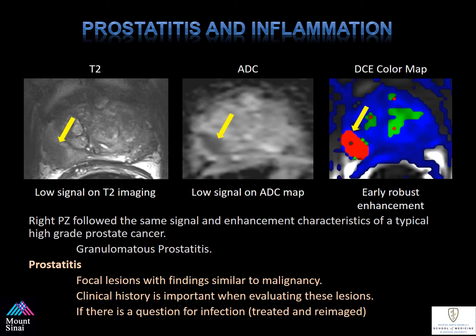As mentioned before, prostatitis and inflammation. These three images almost look identical to the ones shown earlier denoting what a malignancy looks like on multi-parametric MRI — low signal on T2, low signal on ADC, and early arterial enhancement. This area was actually biopsied and found to be granulomatous prostatitis. In summary, prostatitis can exist as a focal lesion similar to malignancy. It's really important that you have the clinical history when evaluating these lesions. If there's a question of infection, treat and re-image at a later date, usually approximately three months after the initial scan.